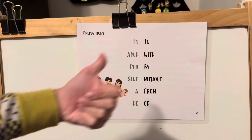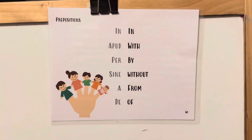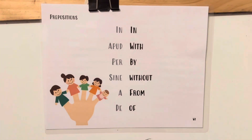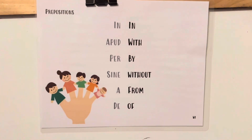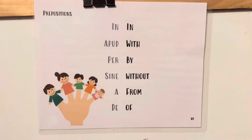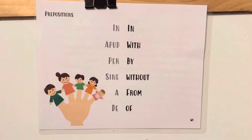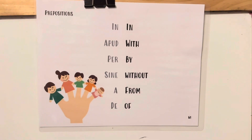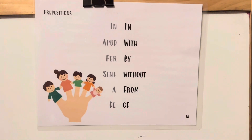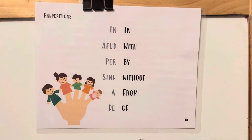Latin prepositions — Latin, English: 'in' and, 'per' by, 'sine' without, 'a' from, 'de' of.